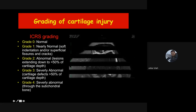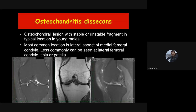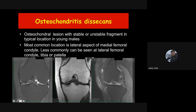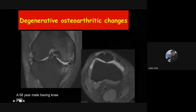Osteochondritis dissecans (OCD) is a known appearance in young individuals — an osteochondral fragment at the lateral aspect of the medial femoral condyle resulting from chronic injury or end-on microtrauma. OCD is graded: grade one is subchondral injury only, grade two is partial detachment of the fragment, grade three is complete detachment but still in place, and grade four is displacement of the fragment from its normal site — acting like a loose body.